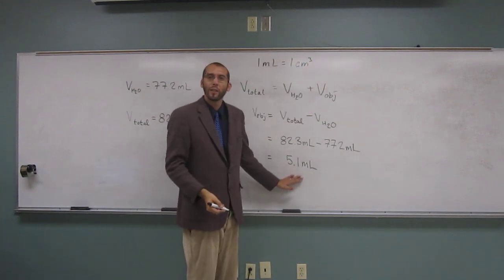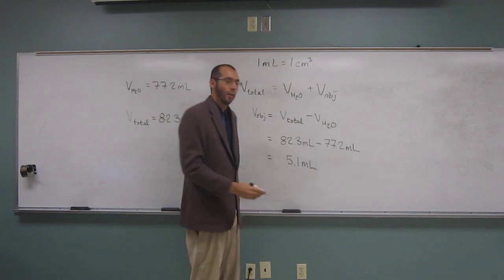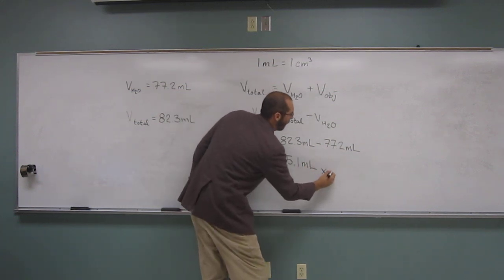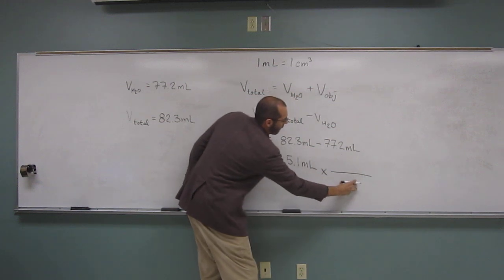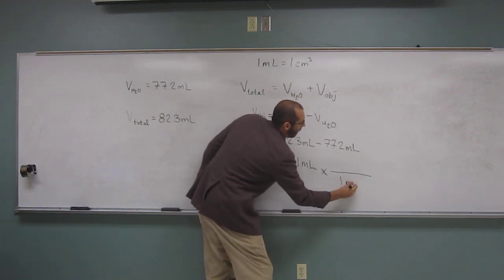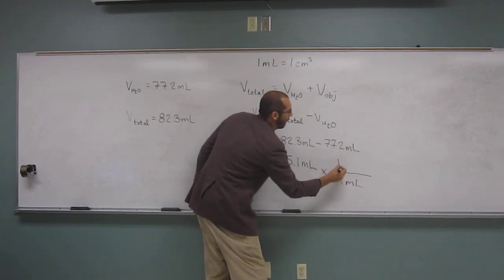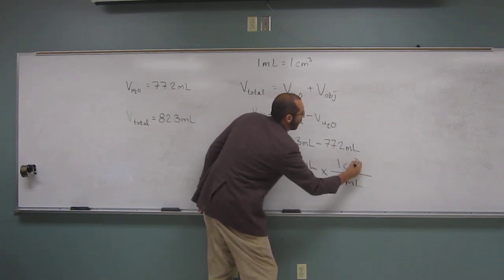Do you guys remember? 1 mil equals 1 cubic centimeter. So, could we use that conversion factor to figure out how many cubic centimeters? Yes. So, what would we do? Multiply. What would we put down here? 1 mil. 1 mil. Thank you, everybody. Up here. 1 cubic centimeter.